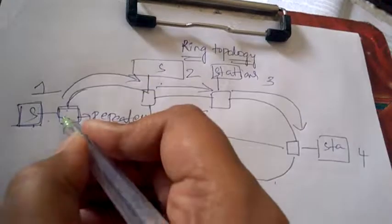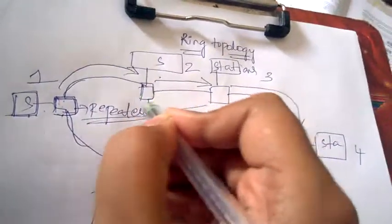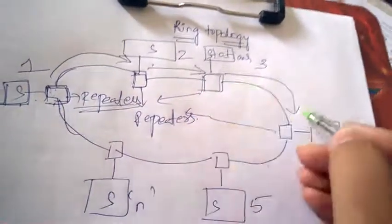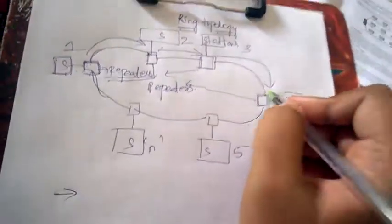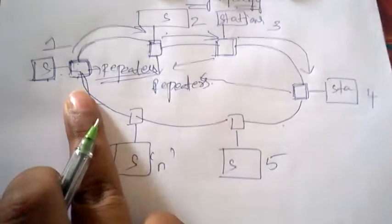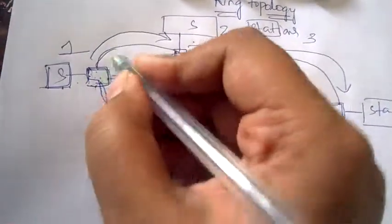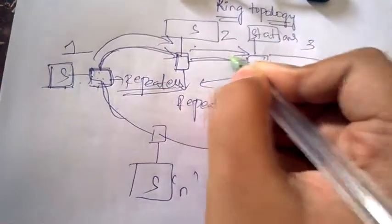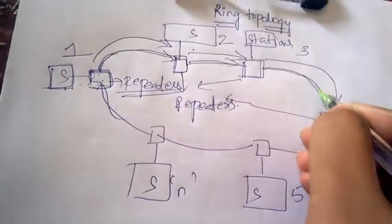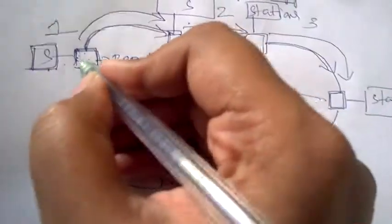The information will also pass through repeaters. The repeater transfers the information from one station to another station until it reaches the destination station, and it also regenerates the bits.